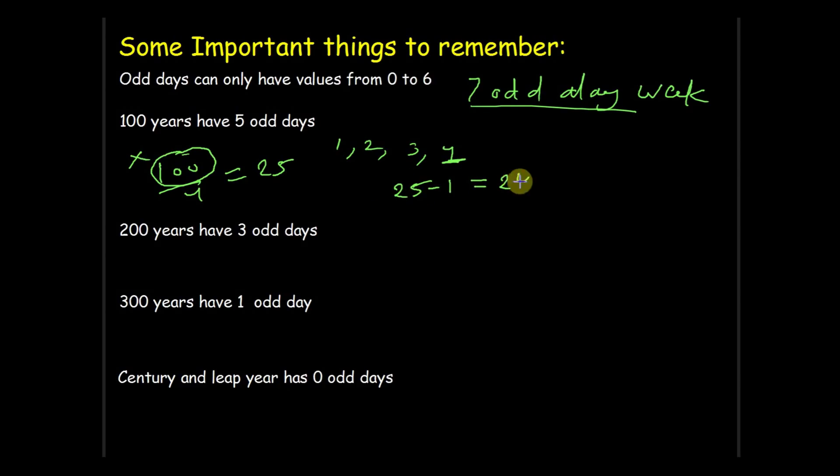That means we have 24 leap years in 100 years and 100 minus 24 is 76, so we have 76 ordinary years. As we have already seen in previous screen, ordinary year has one odd day and leap year has two odd days. So 76 plus 2 multiply by 24 equal to 124. And we know that odd days maximum value is 6, so we divide 124 by 7 then it gives us 5 odd days.